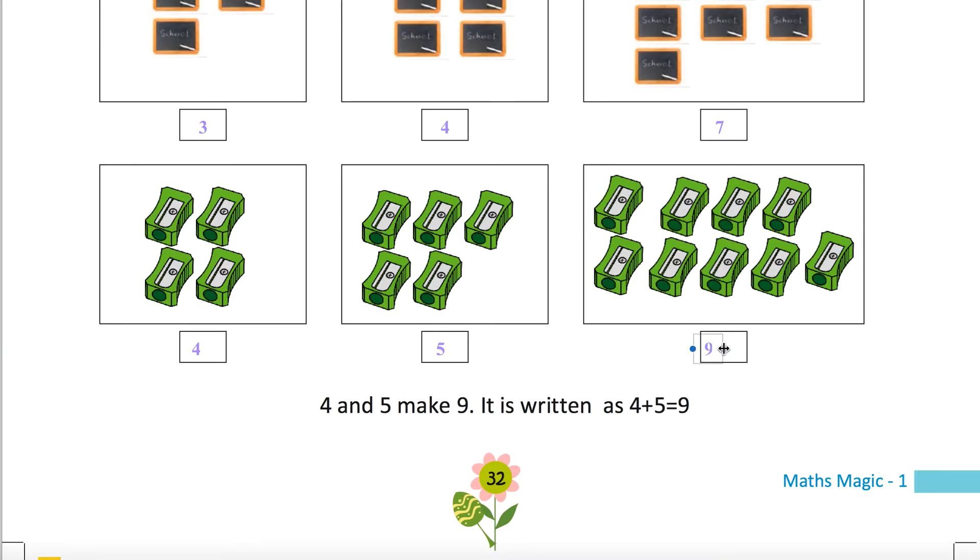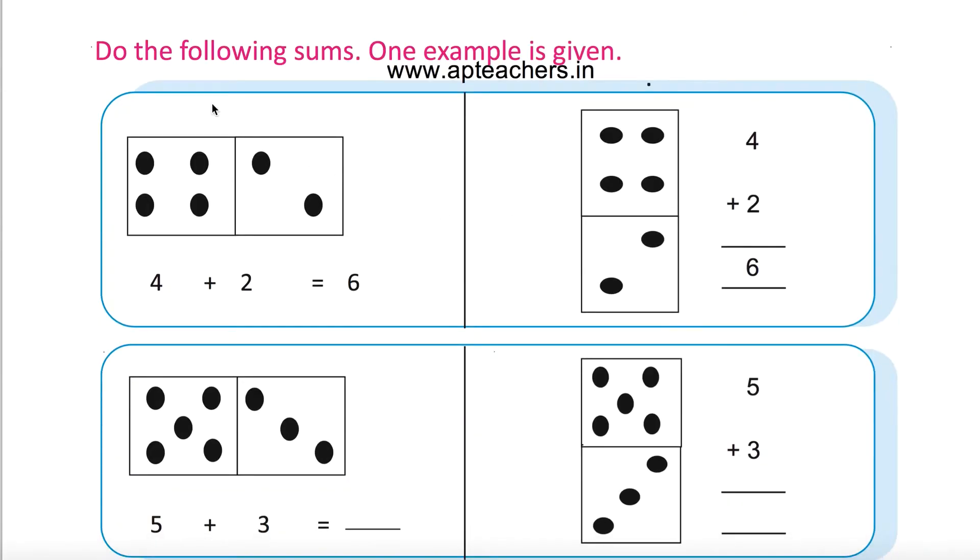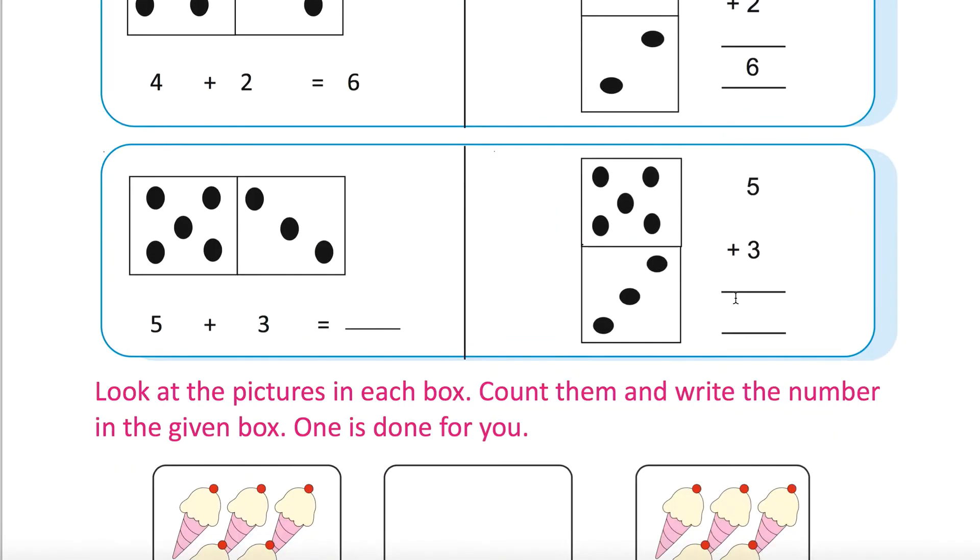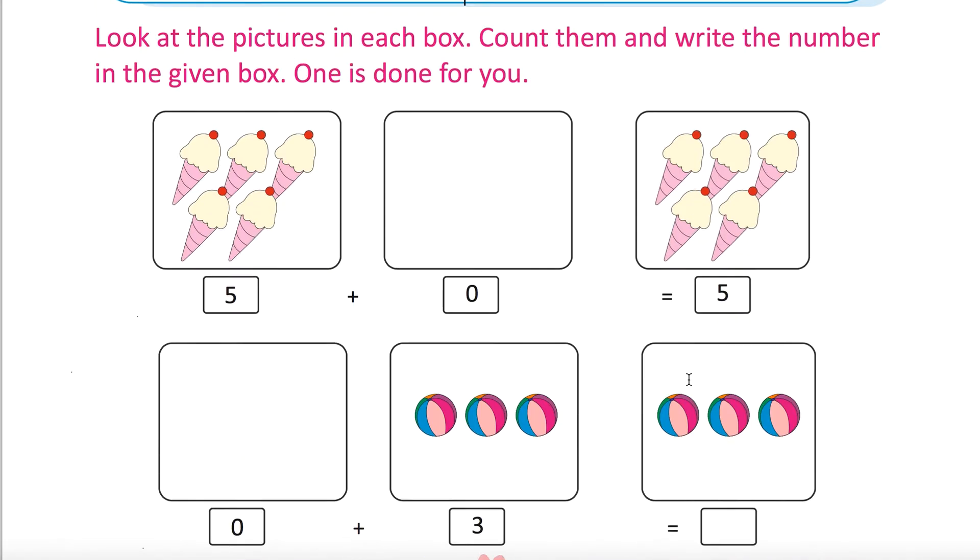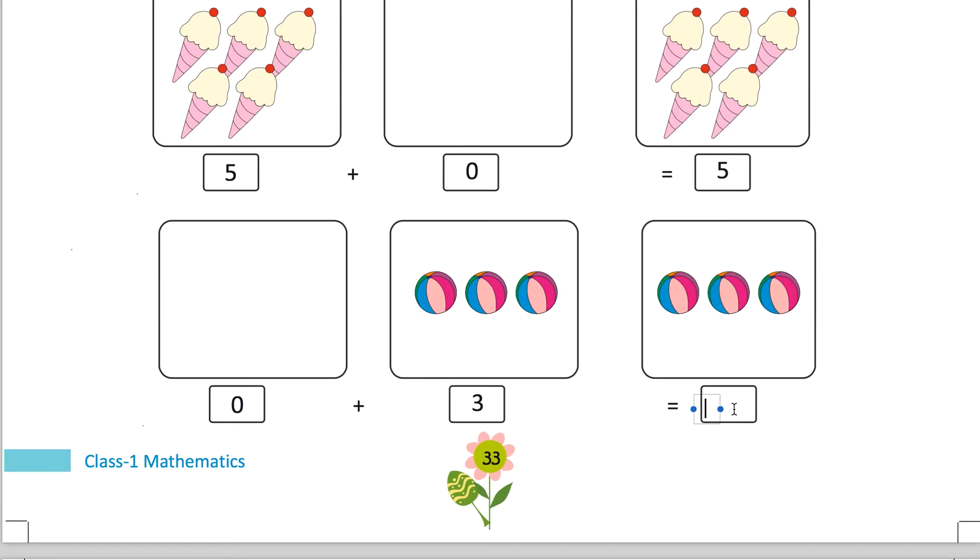Four and five make nine. It is written as four plus five equals nine. Do the following sums. Four plus two is six. Five plus three is eight. Five plus zero is five. Zero plus three is three, the same number.